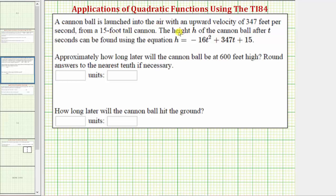A cannonball is launched into the air with an upward velocity of 347 feet per second from a 15-foot tall cannon. The height h of the cannonball after t seconds can be found using the equation h equals negative 16t squared plus 347t plus 15. We need to approximate how long after launch the cannonball will be at 600 feet high, rounding to the nearest tenth if necessary, and determine how long later the cannonball will hit the ground.